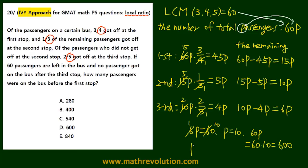The total number of passengers is 600, and our answer is choice D. Remember how we solved the local ratio problem using the IV approach.